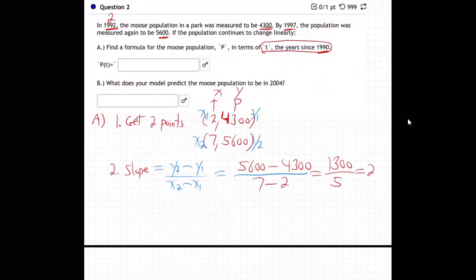I think that's 260. Okay, there's 260. That's mooses. I don't know how to say the plural for moose. Mooses per year is what that is.